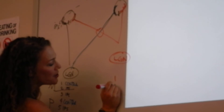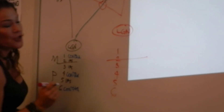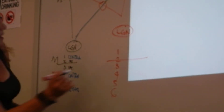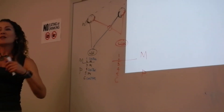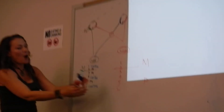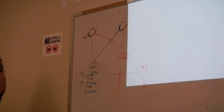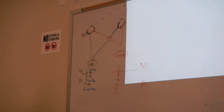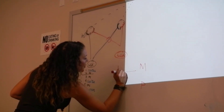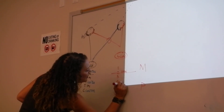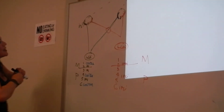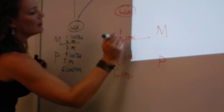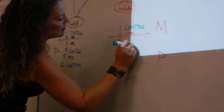This lateral geniculate nucleus also has six layers. The first two are magnocellular, and the next four are parvocellular. The magnocellular layers process information from the rods — movement. Parvocellular processes cones — detail and color. 'Parvo' means small, like piccolo. The ipsilateral layers will be processing ipsilateral input, and the contralateral layers will be processing contralateral input.